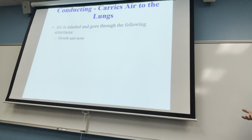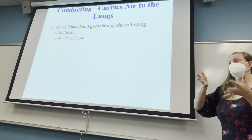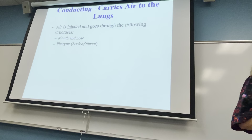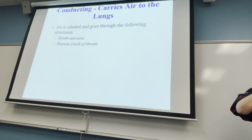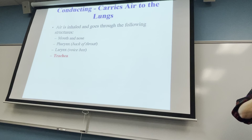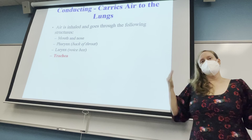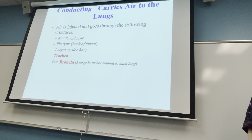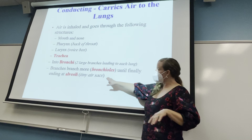For conduction, air gets breathed in through your mouth and nose, goes to the back of your mouth called the pharynx, then past the larynx — the voice box — into the trachea. The trachea branches into two main bronchi, one for each lung. The bronchi branch into smaller branches also called bronchi, which look like smaller versions of the trachea.